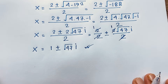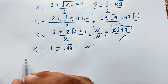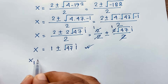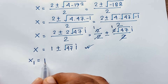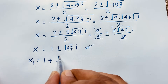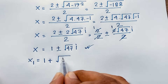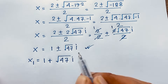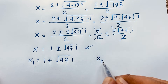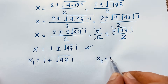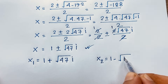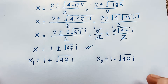So we find x₁ equals 1 plus √47·i and x₂ equals 1 minus √47·i.